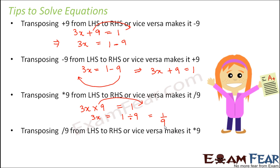In a similar way, if you are transposing divided by 9 from one side to another, it becomes multiplied by 9. Like you have 3x equals 1 by 9. So if you want to move this 9 to this side, then it becomes 3x into 9 equals 1.